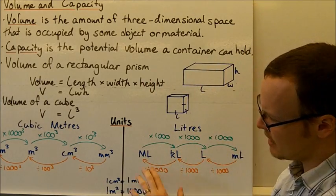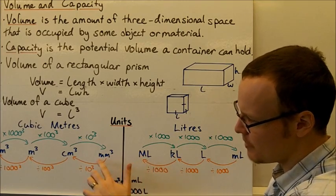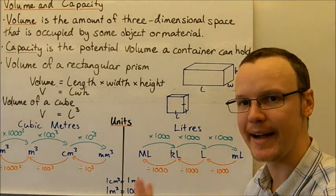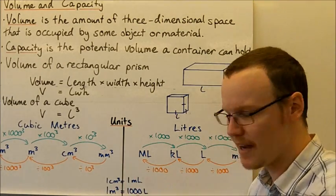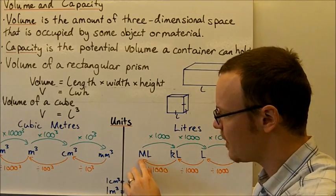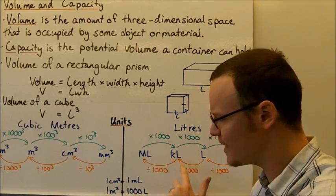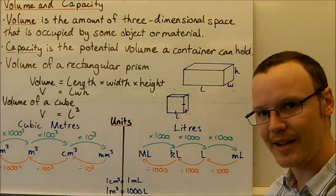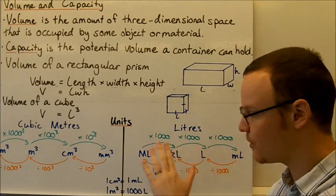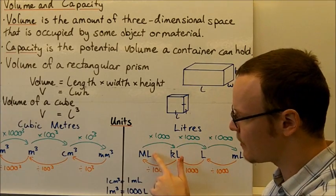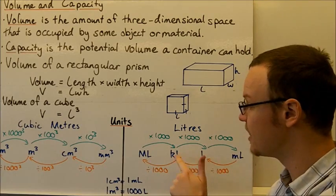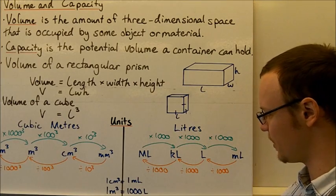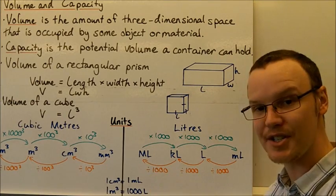Looking at litres: the capital M stands for mega — like megabyte — and mega means one million, so a megalitre is one million litres. Kilo means one thousand, so a kilolitre is one thousand litres. And a millilitre is one thousandth of a litre. Converting between litre units is much easier: from megalitres to kilolitres, multiply by one thousand; kilolitres to litres, multiply by one thousand; litres to millilitres, multiply by one thousand. Going back the other way, divide by those same values.